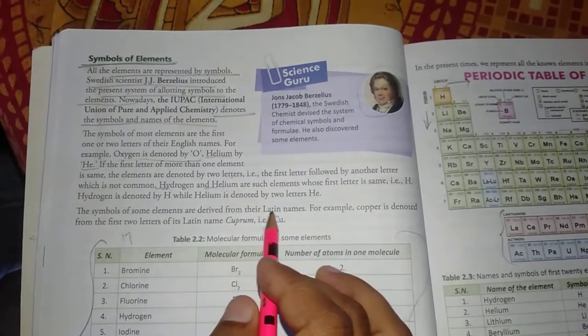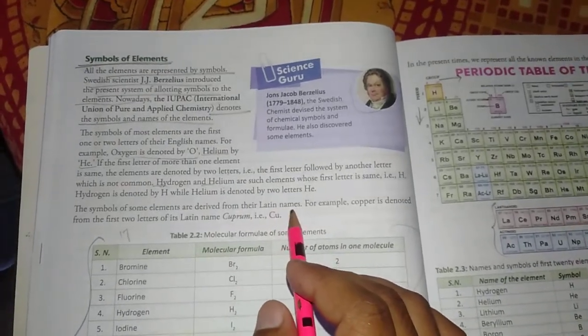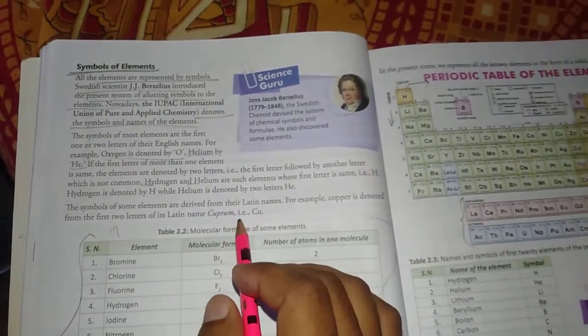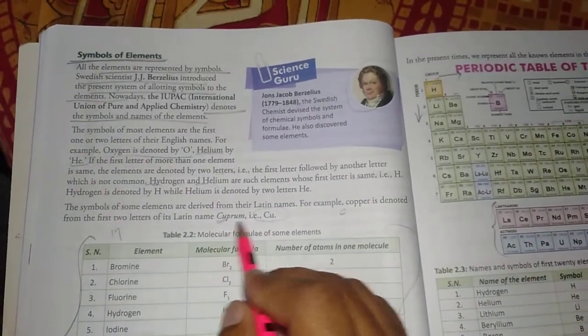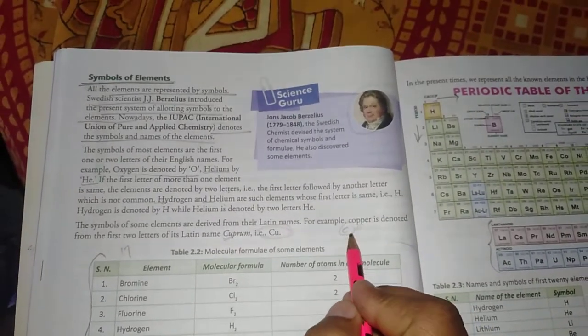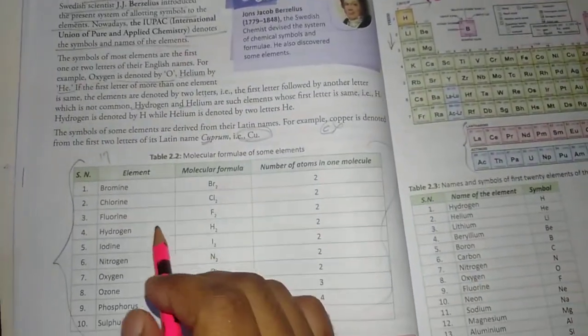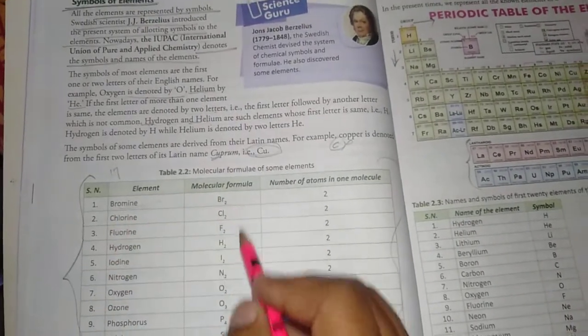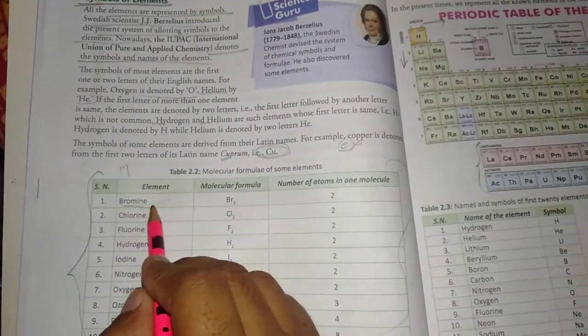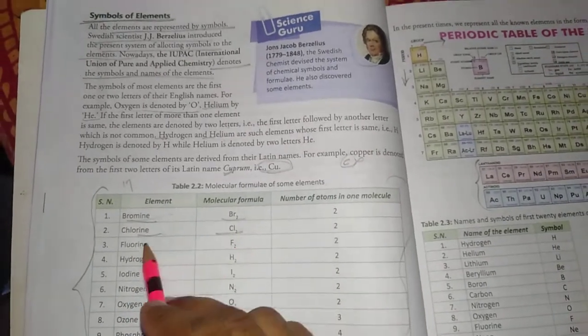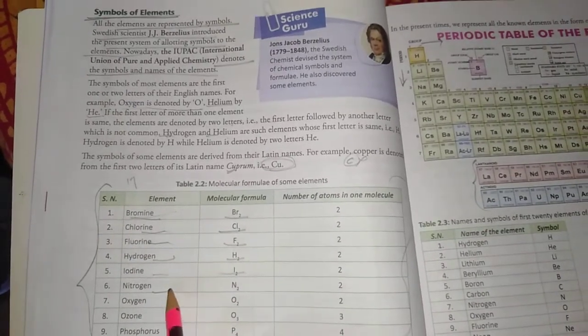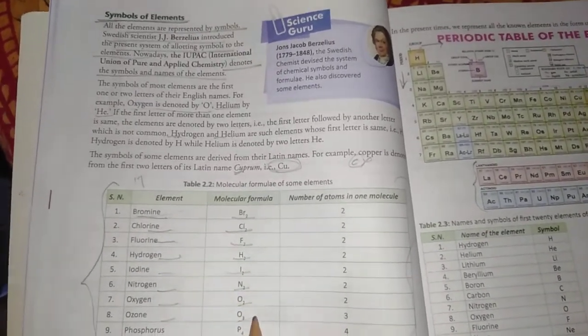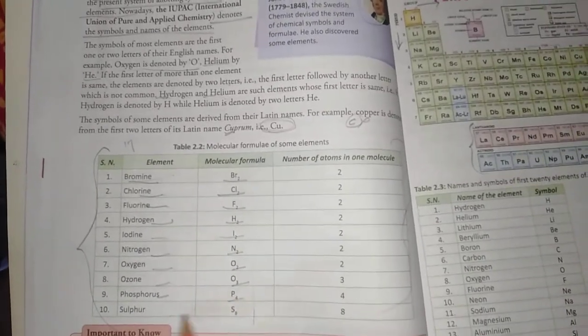The symbols of some elements are derived from their Latin names. Here we have molecular formulas. Bromine is Br2, Chlorine is Cl2, Fluorine is F2, Hydrogen is H2, Iodine is I2, Nitrogen is N2, Oxygen is O2, Ozone is O3, Phosphorus is P4, and Sulfur is S8.